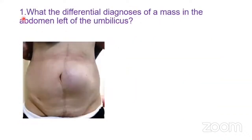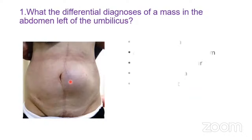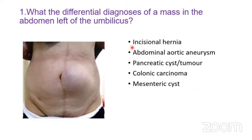General questions on incisional hernia: what are the differential diagnoses of a mass in the abdomen left of the umbilicus? There is a large midline scar pushing the umbilicus slightly to the right side, with a large mass showing some skin discoloration, measuring about 4 by 5 centimeters in diameter. The differential diagnoses include: incisional hernia, abdominal aortic aneurysm, pancreatic cyst or tumor, colonic carcinoma, or a mesenteric cyst.